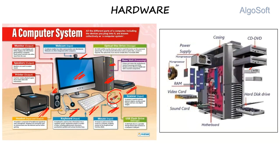Hardware is the physical component of a computer — we can see and touch it. Inside the CPU alone we have so many things: RAM, video cards, sound cards, motherboards, CD drives, DVD drives, hard disk drives, power supplies. All these things are hardware. Everything inside a computer which you can touch is called hardware.